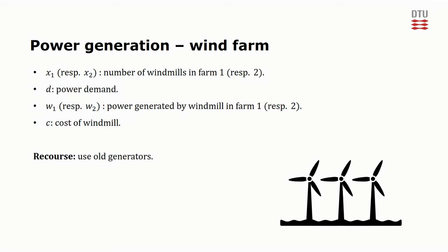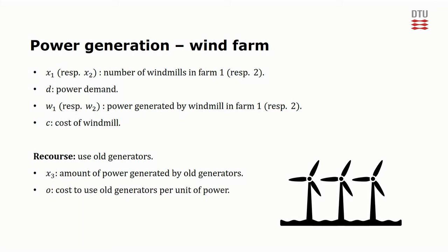However, using the generators will be expensive and the city will be penalized for not fully living up to the new green energy requirements. We introduce the continuous variable x3, which corresponds to the amount of electricity generated by the old generators. We also introduce parameter O as the per unit of electricity cost associated with using the generators. This also takes the monetary penalties into account.